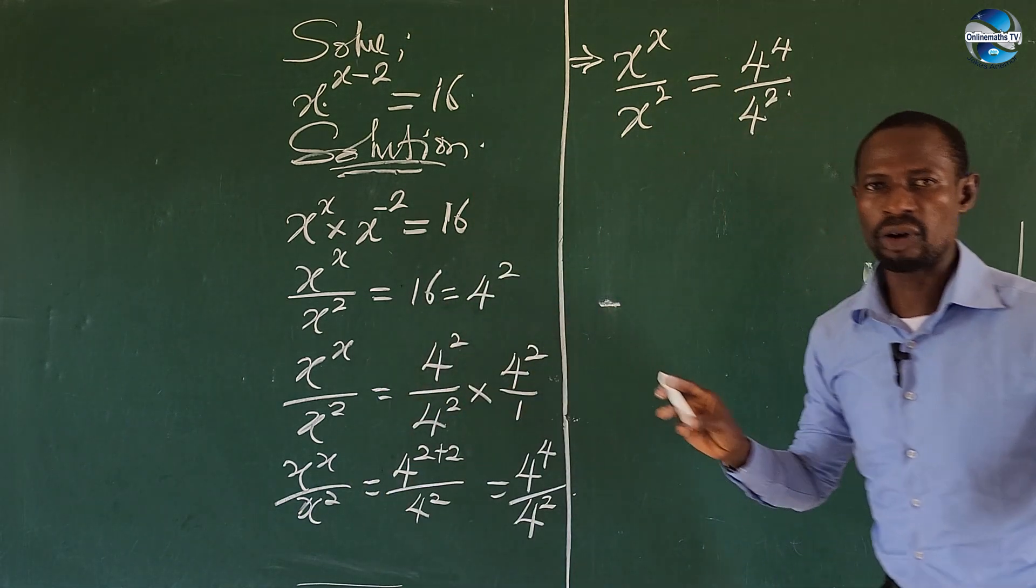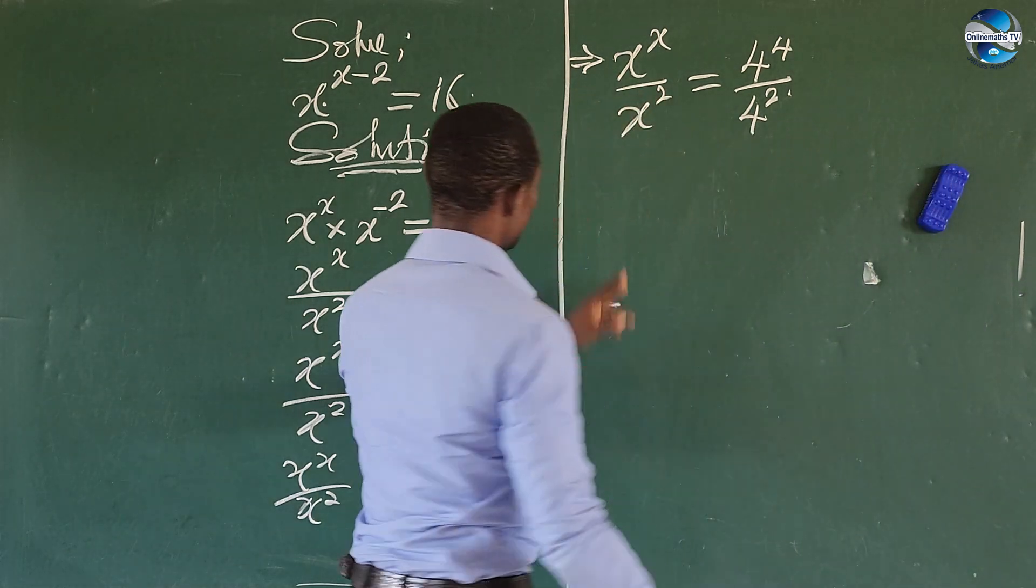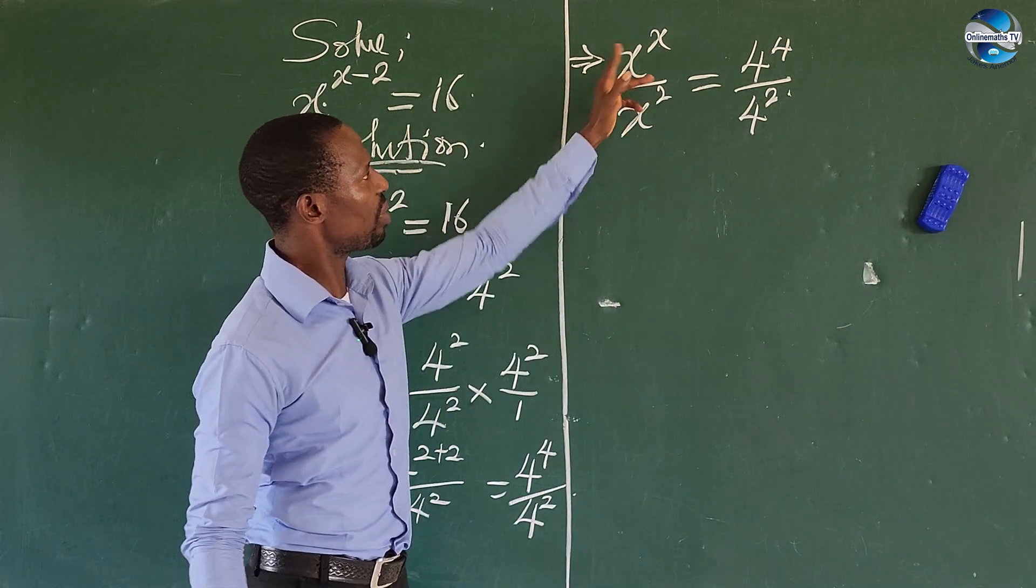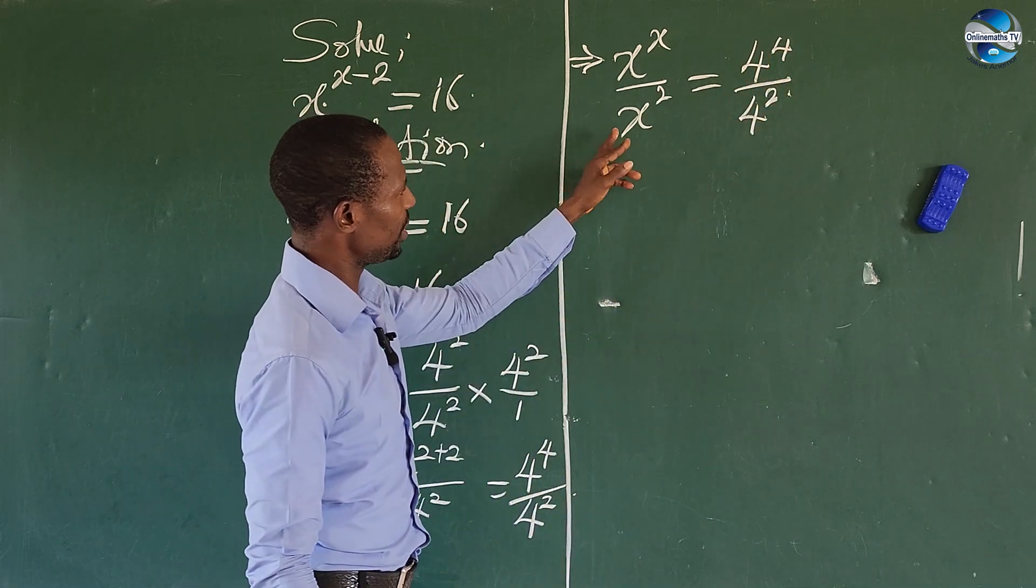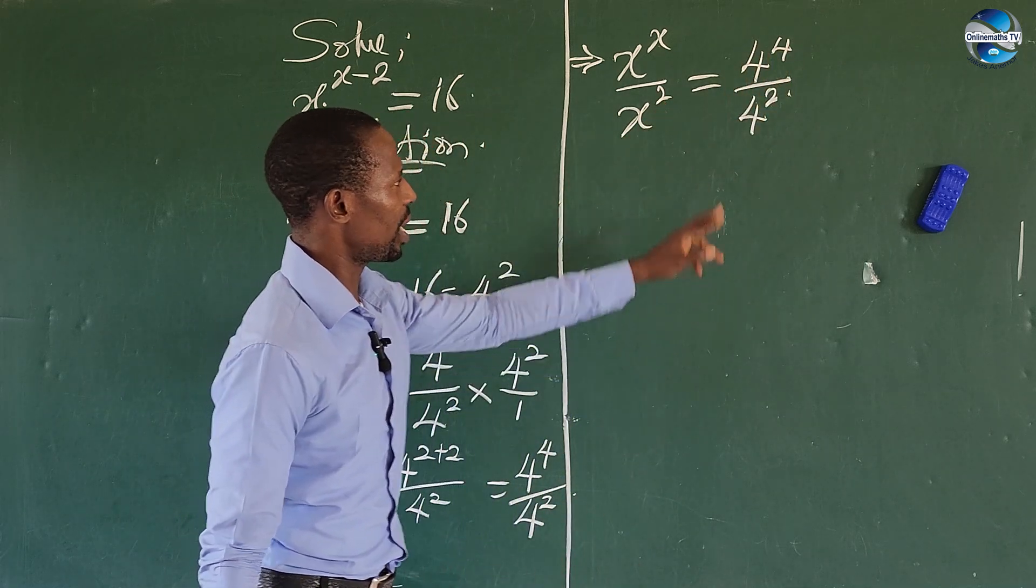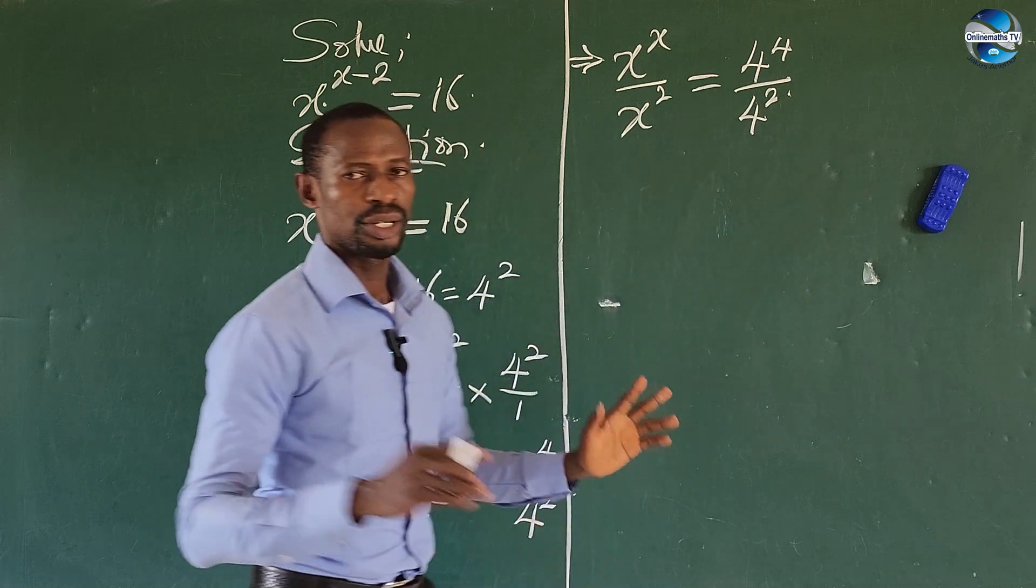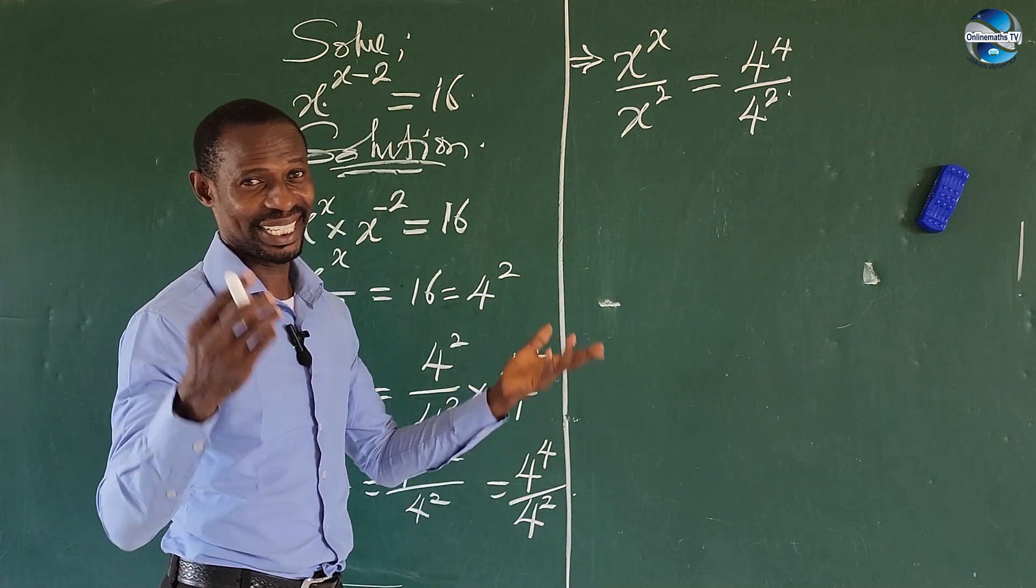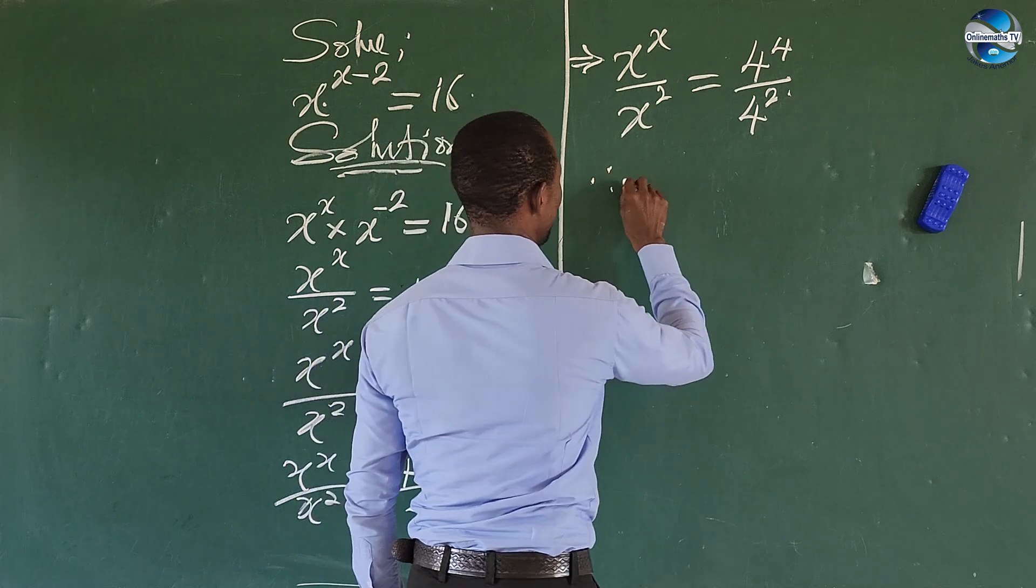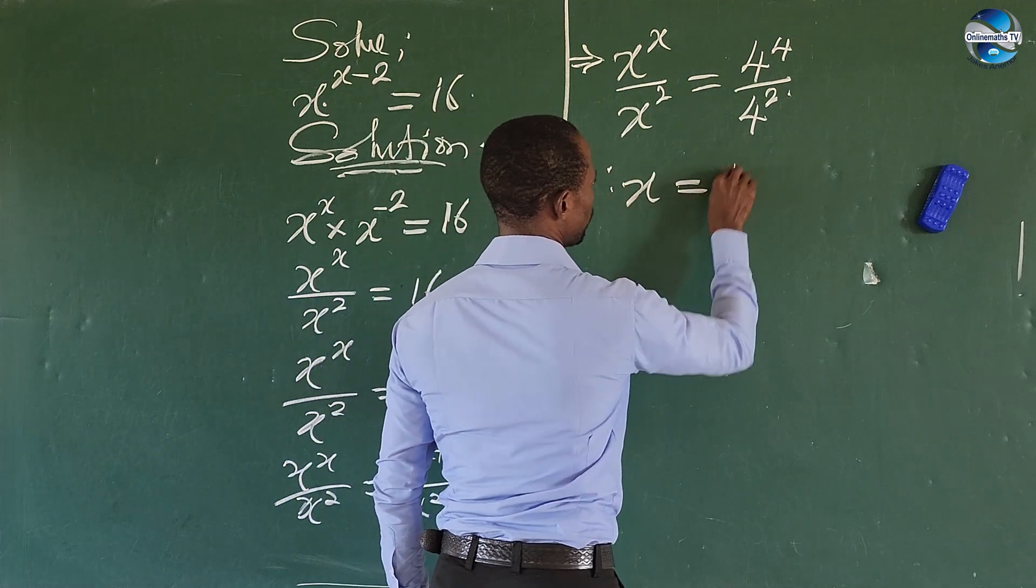Here we can do our comparison. Easy. Look at what we have here. We are having x to the power of x here, we are having 4 to the power of 4 here. We are having x to the power of 2 and here we are having 4 to the power of 2. So what does that imply? It means x is equal to 4. Easy. So the answer we now have here: x is equal to 4.